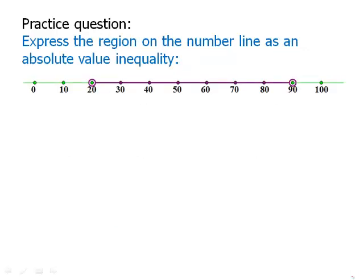Here's another practice question. Pause the video and then we'll talk about this. Express the region on the number line as an absolute value inequality. So as an ordinary inequality that would be easy. As an ordinary inequality this is just x is greater than 20 and less than 90.